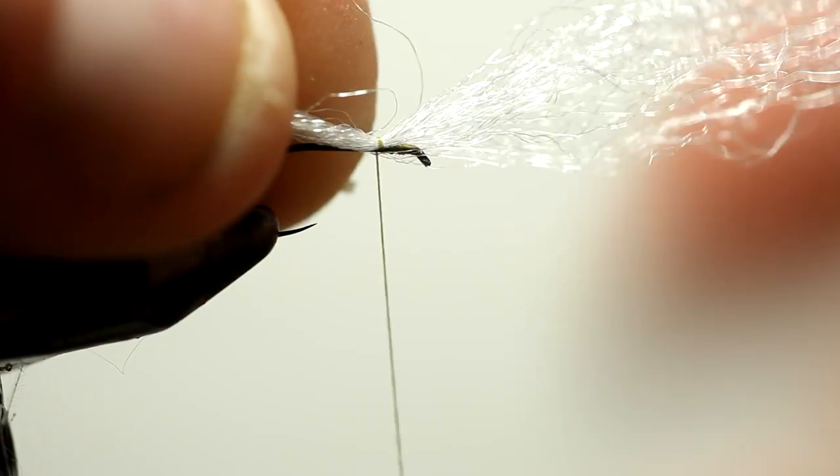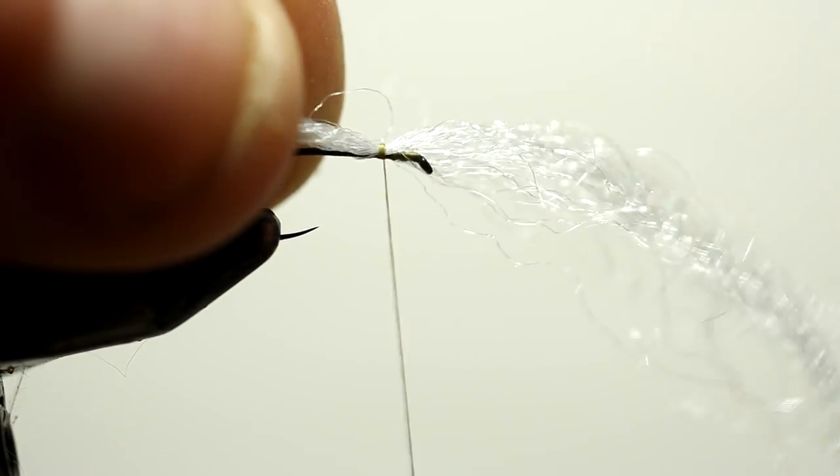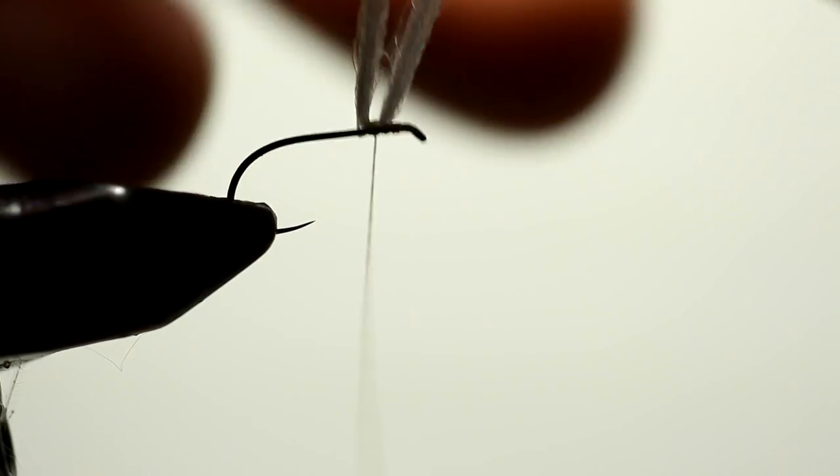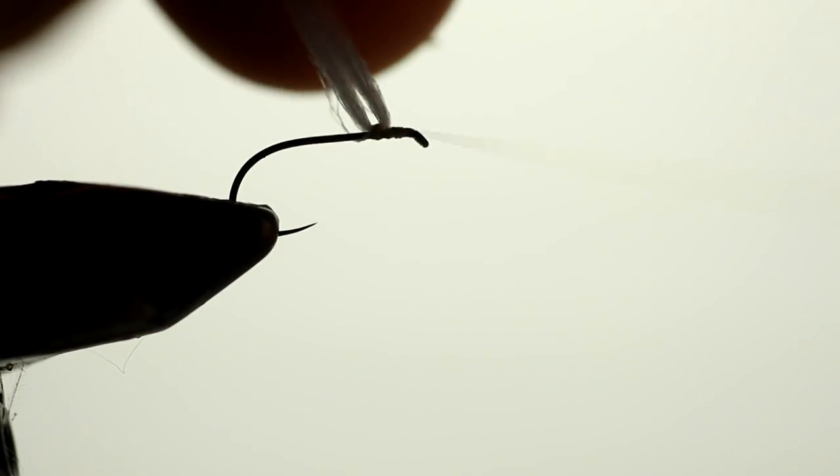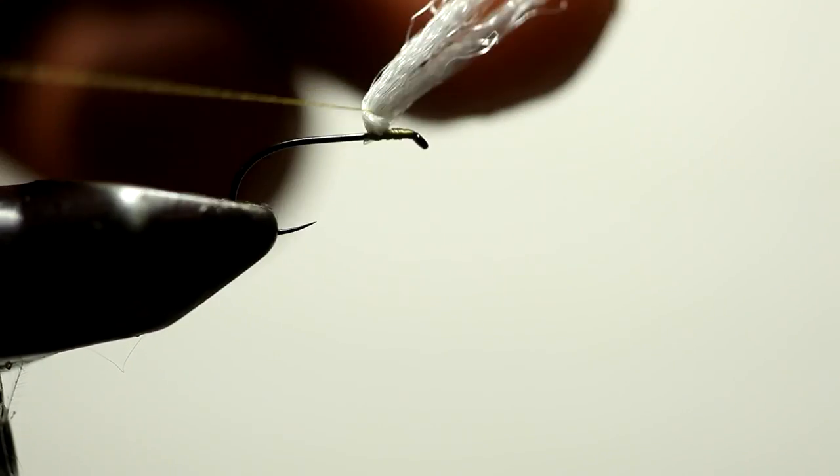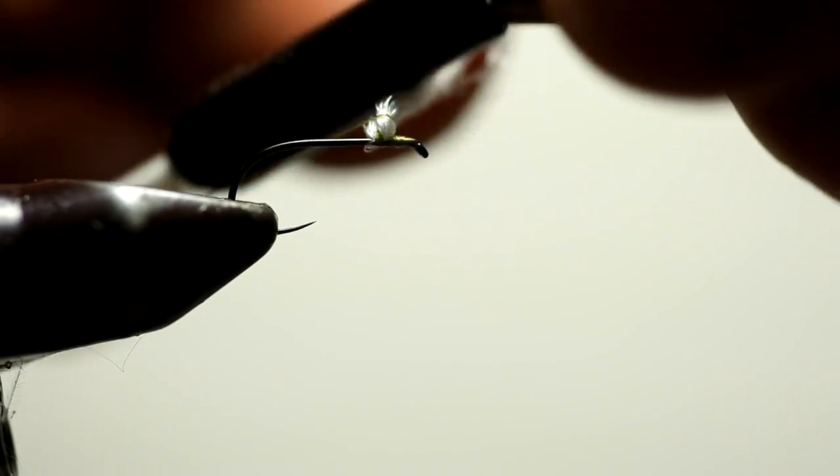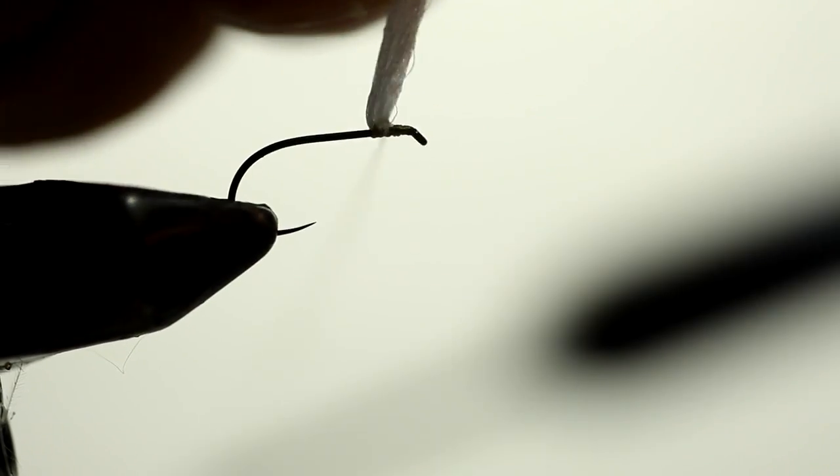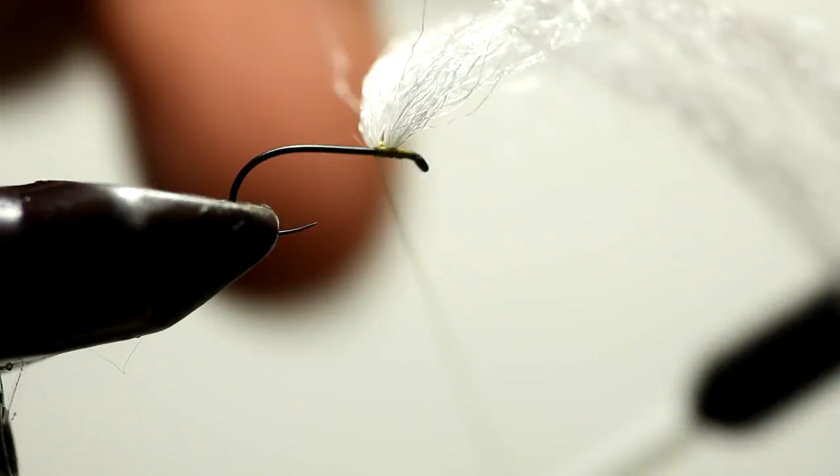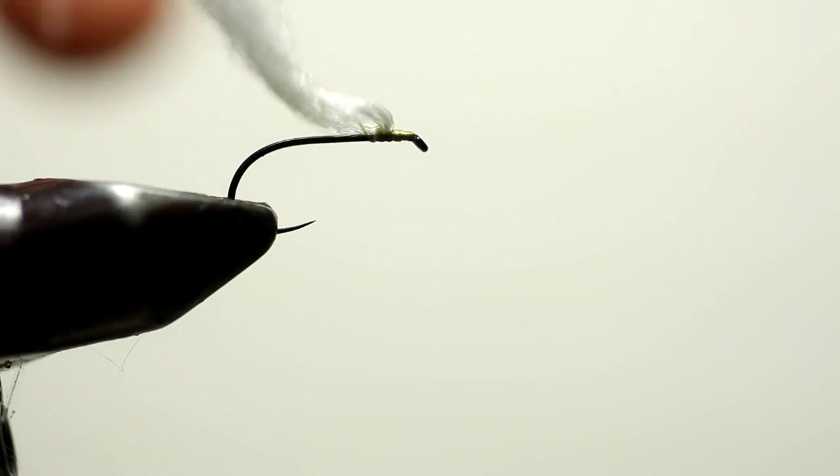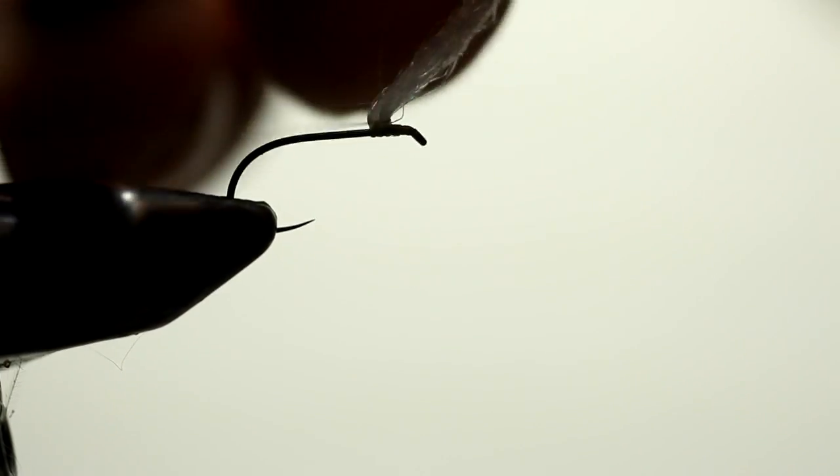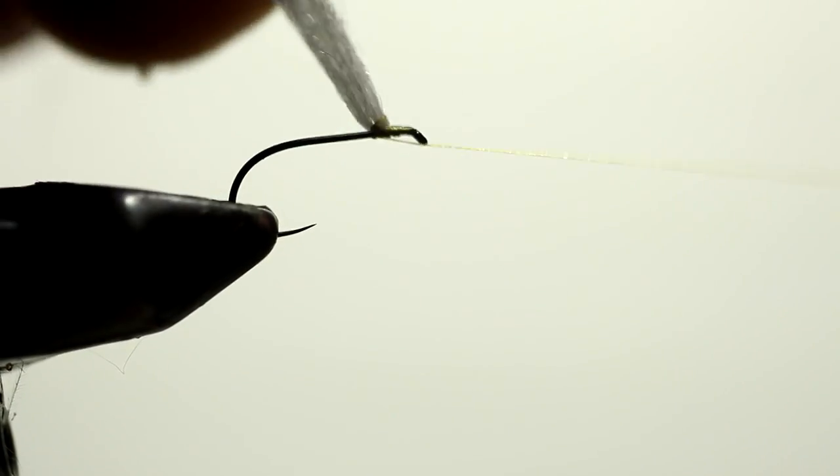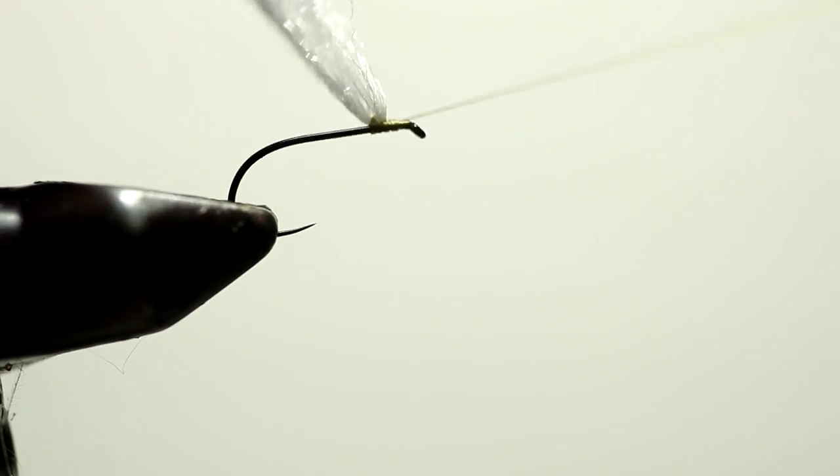First step to tying the fly is to make the post. So I'm going to tie the post in. The most labor intensive part of this fly and any of these flies that are parachute patterns is making the actual parachute.